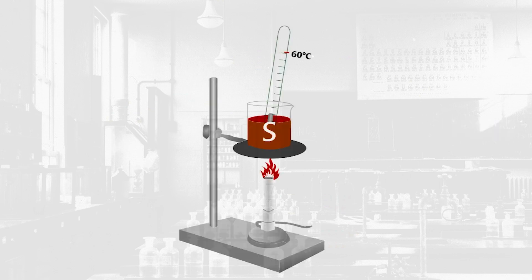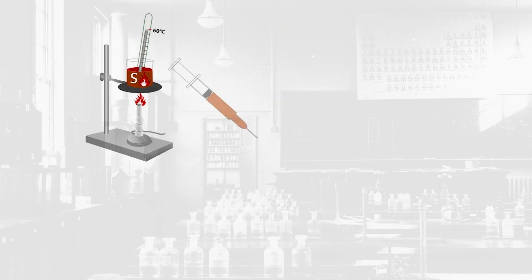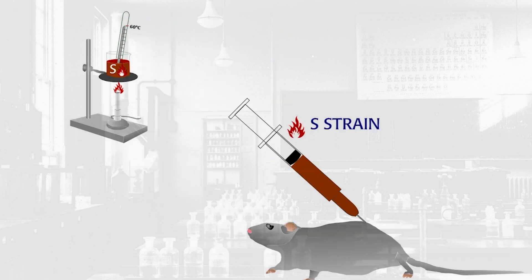First, Griffith heated the S-strain culture to kill the bacteria. As predicted, when injected into mice, the heat-killed bacteria did not produce an infection.